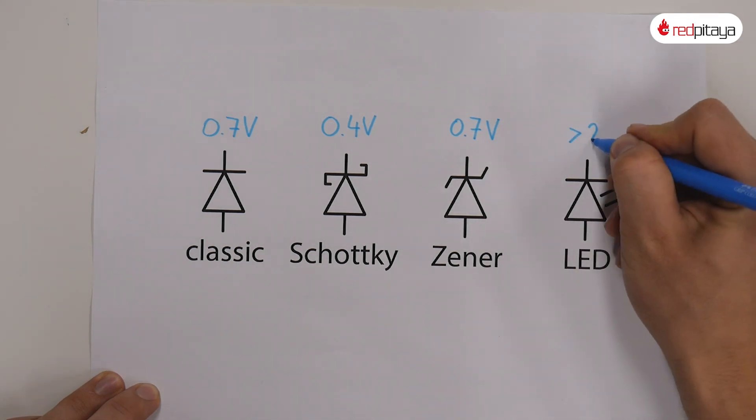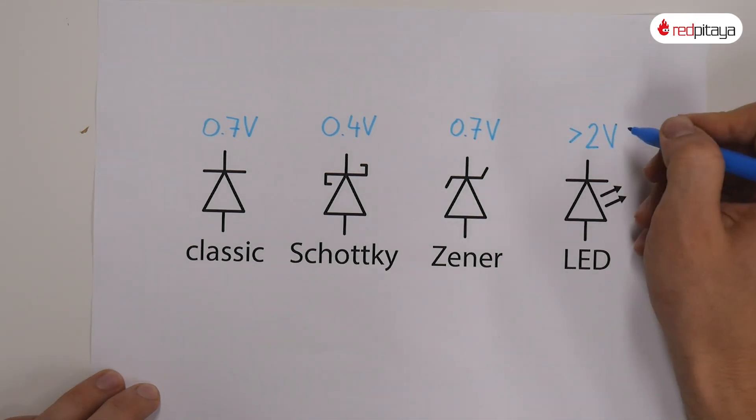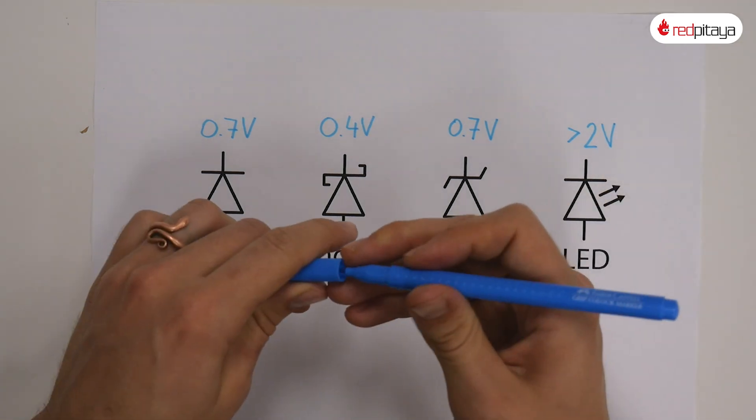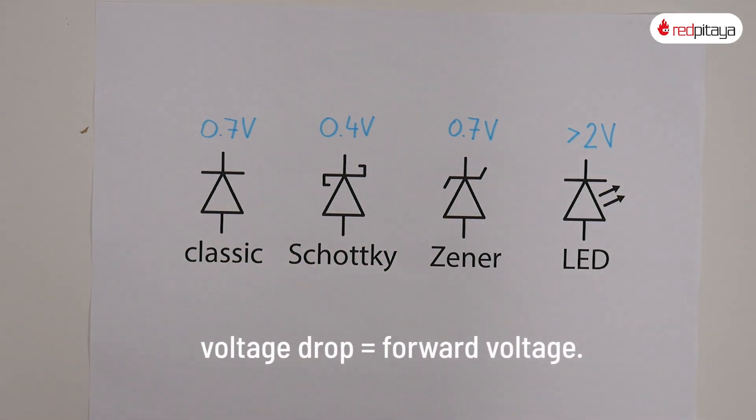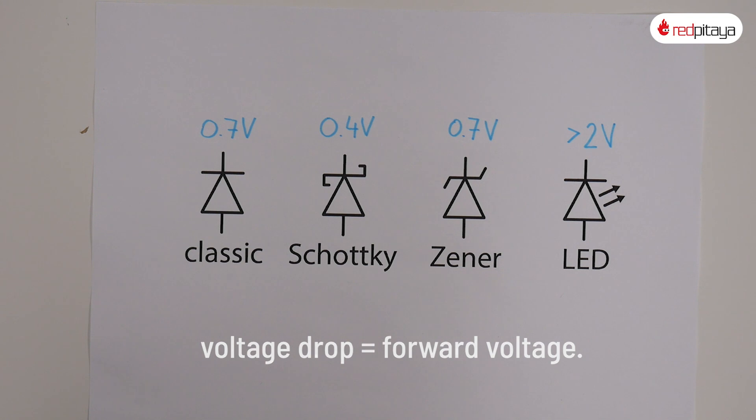When solving circuits with diodes, we usually just assume that voltage drop across the diode is exactly the same as its forward voltage. We will now measure forward voltages of a few LEDs and measure how much current is flowing through them. But before that, I have some bad news, or good ones. Depends on how much you like op-amps. Let me just fetch one.